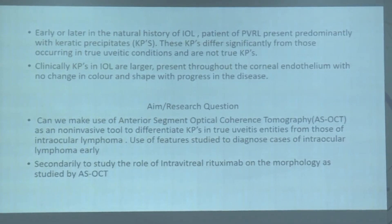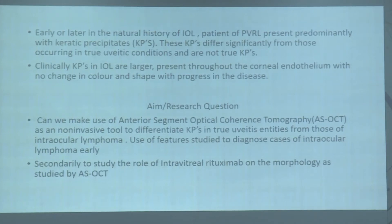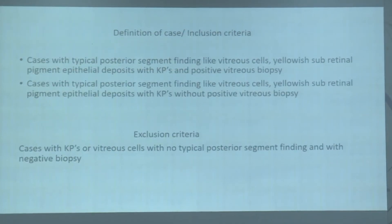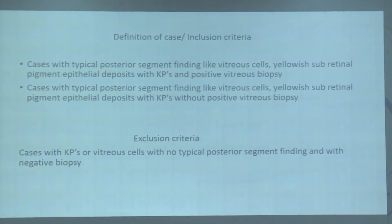The question was: can we use a non-invasive method like ASOCT to differentiate between KPs in true uveatic cases and those in intraocular lymphoma? Can we use this to diagnose intraocular lymphoma earlier? And secondly, how does lymphoma KP morphology change with intravitreal rituximab? That was our secondary aim.